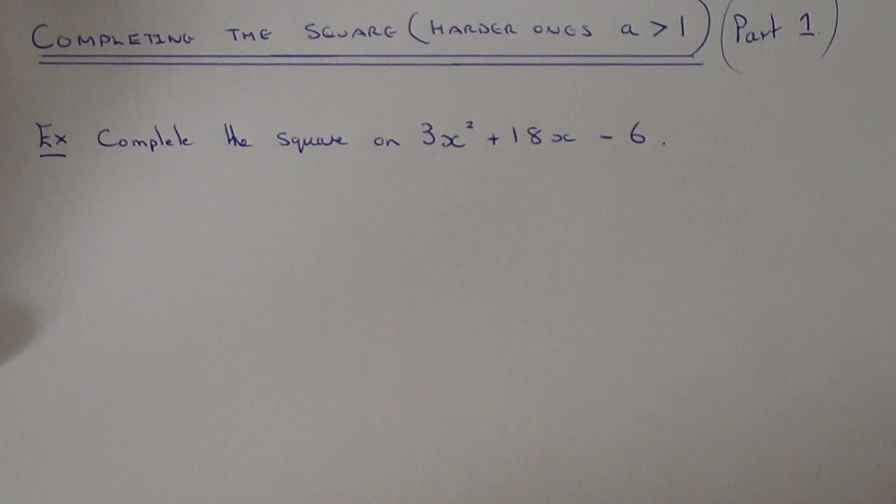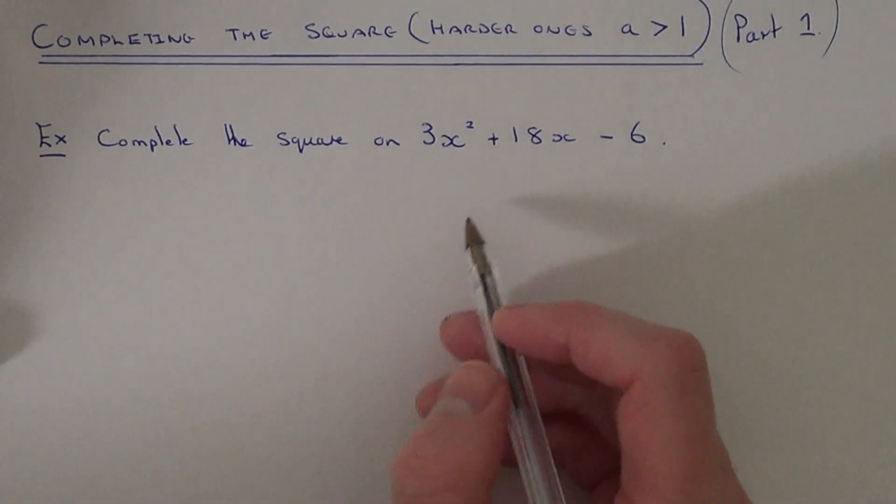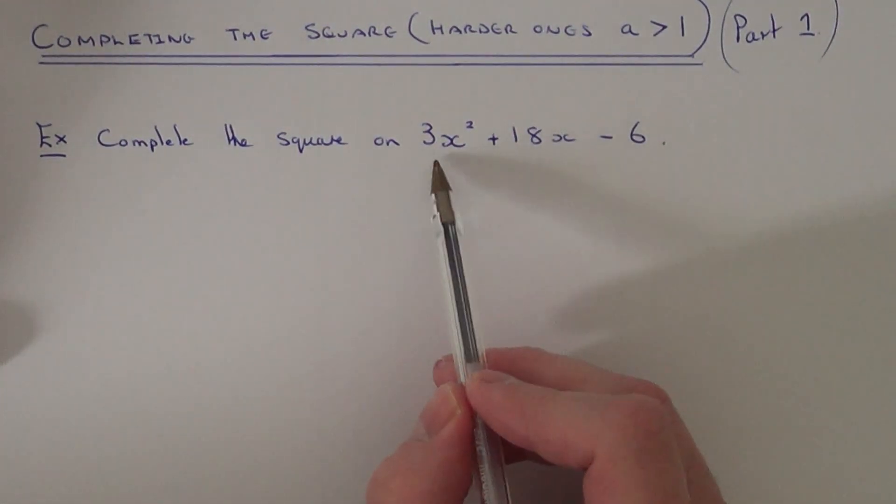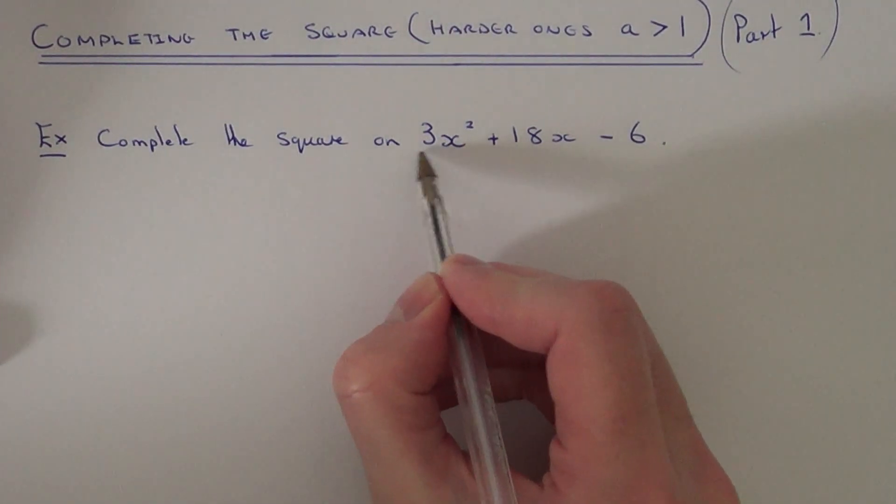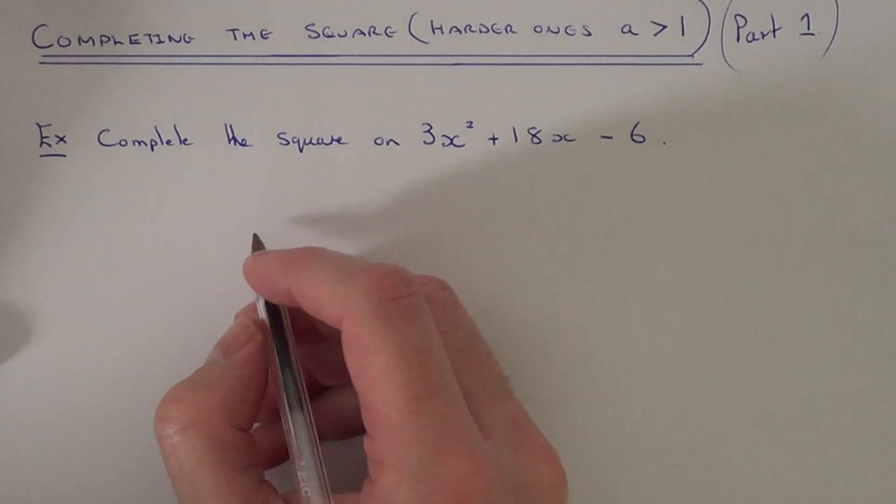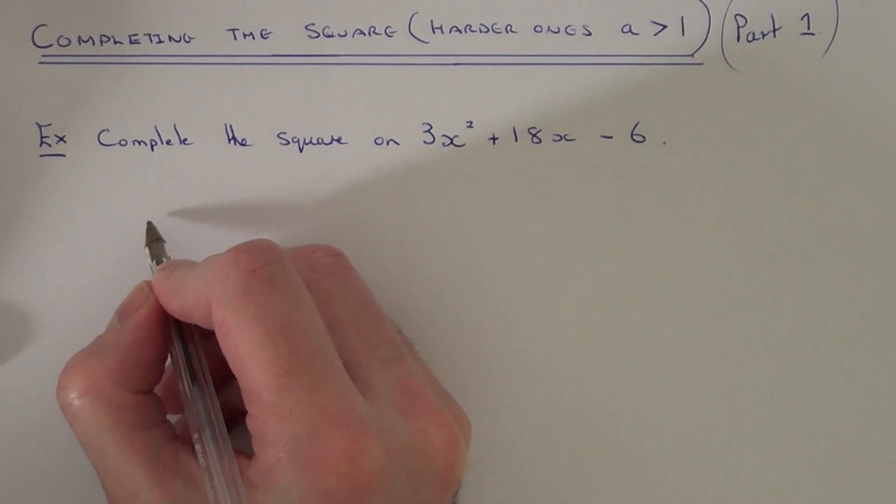So these are much harder to do. The first thing you need to do is divide the quadratic by the number before x squared and put it into a single bracket.